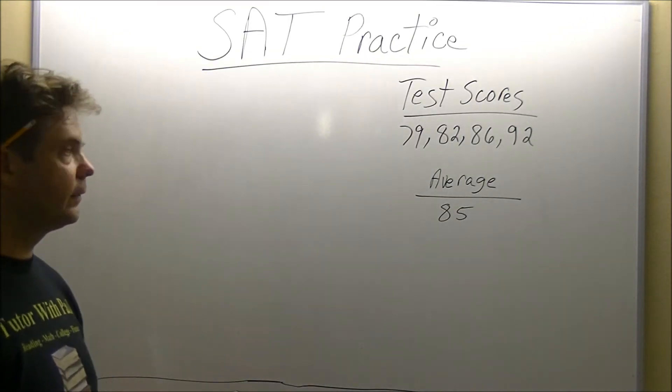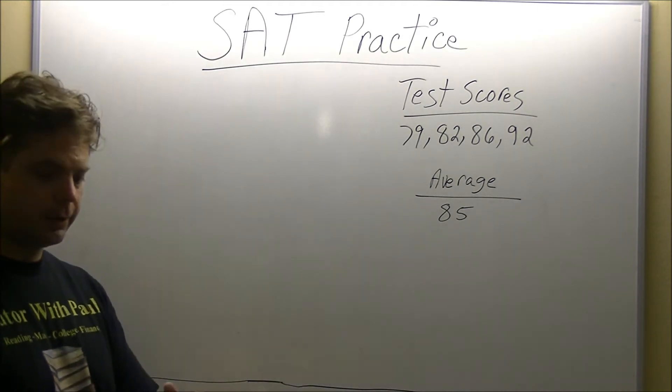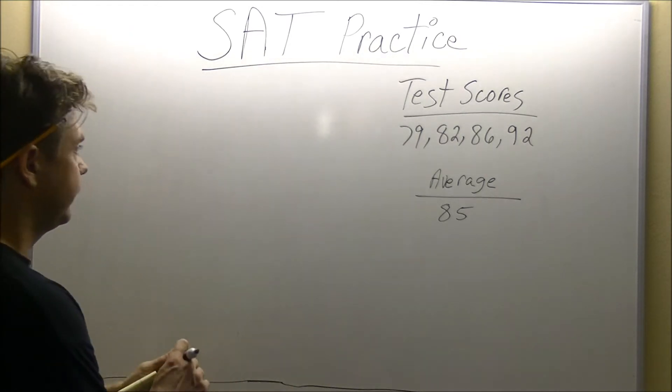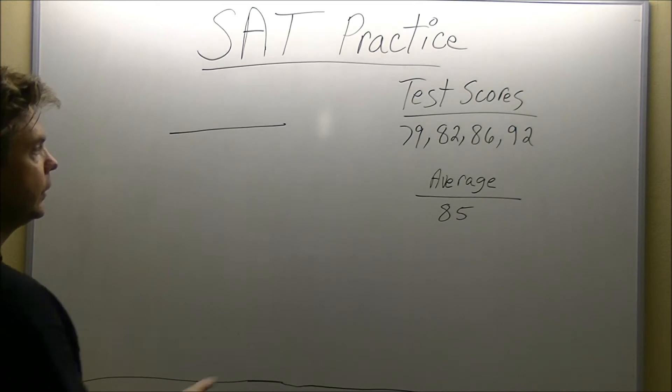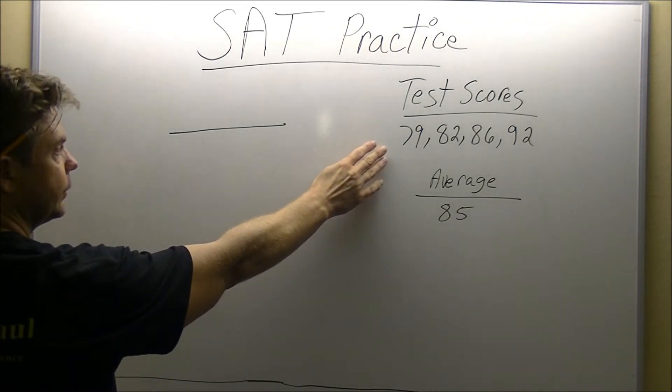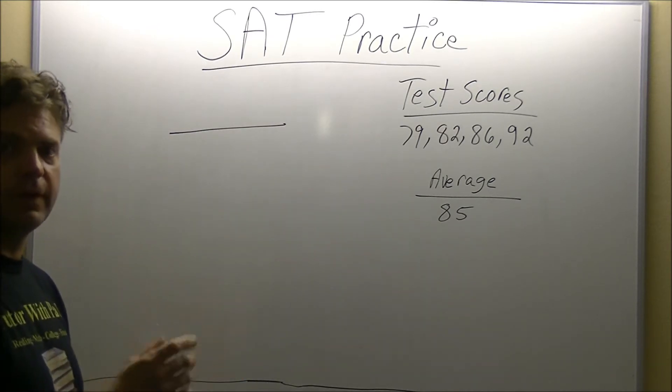In order to solve this, the first thing you do is you set up your structure, and the structure is always going to look like this. You always start with your division, and then what you're going to do is you're going to see how many test scores there were. They give us four, and we're trying to fill in the fifth one, so we know there are going to be five test scores.